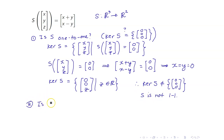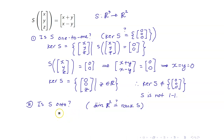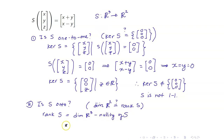Now let us check if S is onto. We determine whether the dimension of the codomain R2 is the same as the rank of S. By the rank-nullity theorem, the rank of S equals the dimension of the domain R3 minus the nullity of S. The dimension of R3 is 3, and the kernel is spanned by the single vector (0,0,1), so the nullity is 1. Therefore the rank of S is 3 minus 1 equals 2, which equals the dimension of R2. So therefore S is onto.